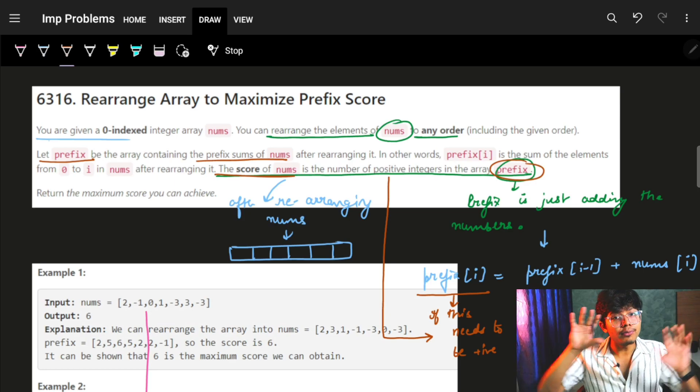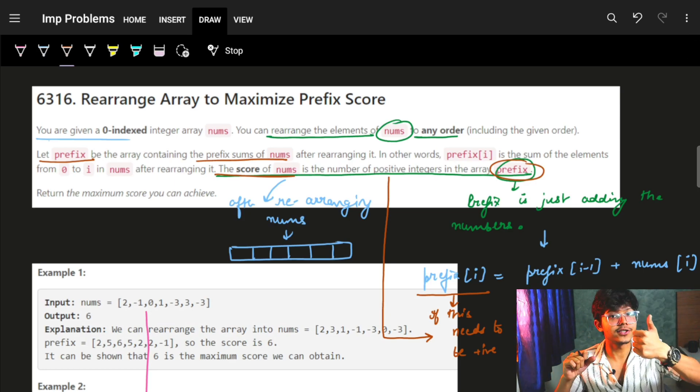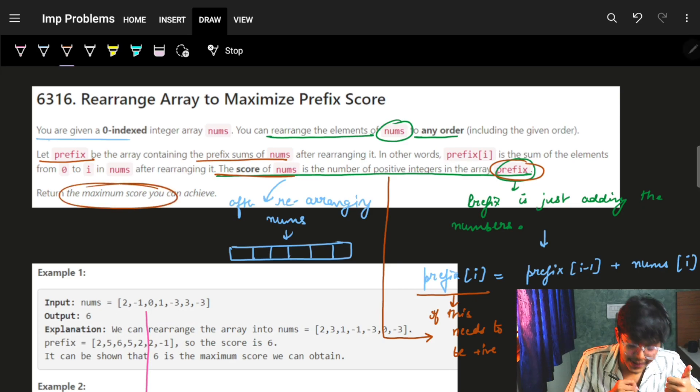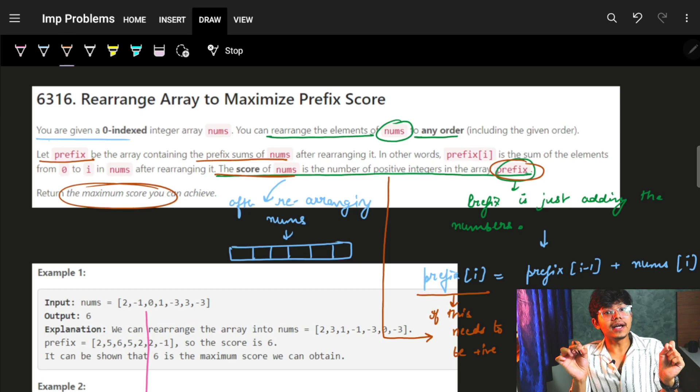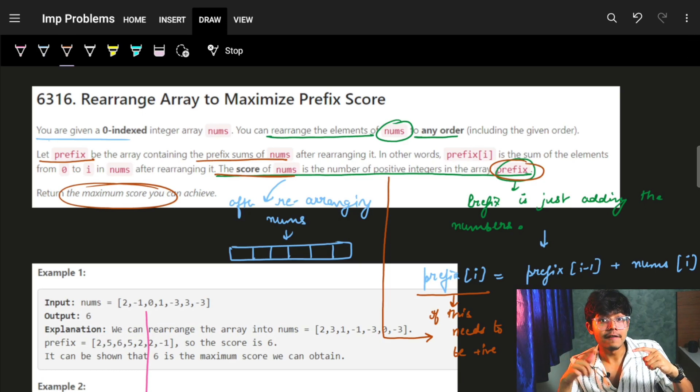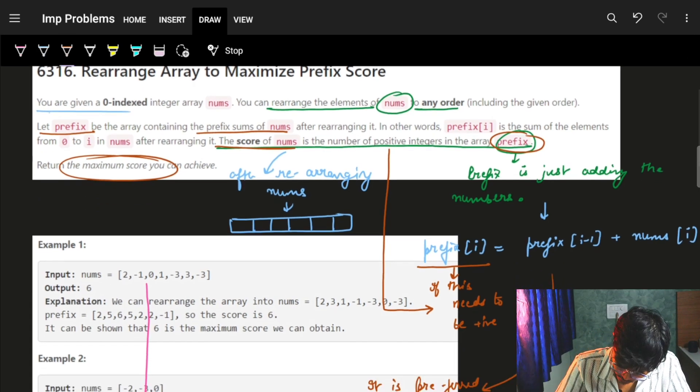The prefix sum array which we have made—any number of integers which are positive in that prefix sum array is my score. And I need to maximize my score, which means I need to maximize the number of positive integers in my prefix sums array which is made by rearranging nums.